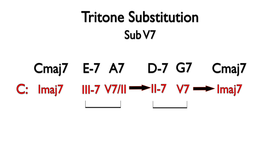We can take the G7 — the primary dominant — and replace it with Db7. This chord can be found a tritone away from G7, the chord that it is substituting for, or a half-step above C major 7, its chord of resolution.